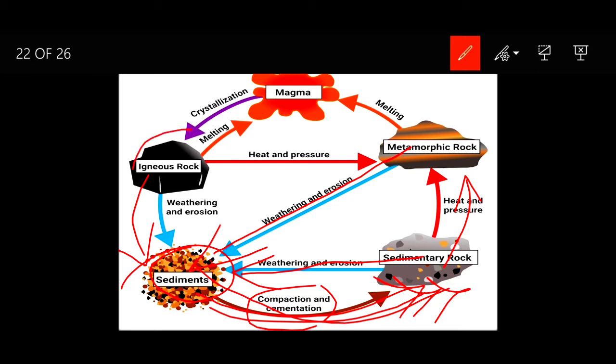An igneous rock can undergo heat and pressure and become metamorphic rock. A metamorphic rock can melt and become magma and cool down to form igneous rock.